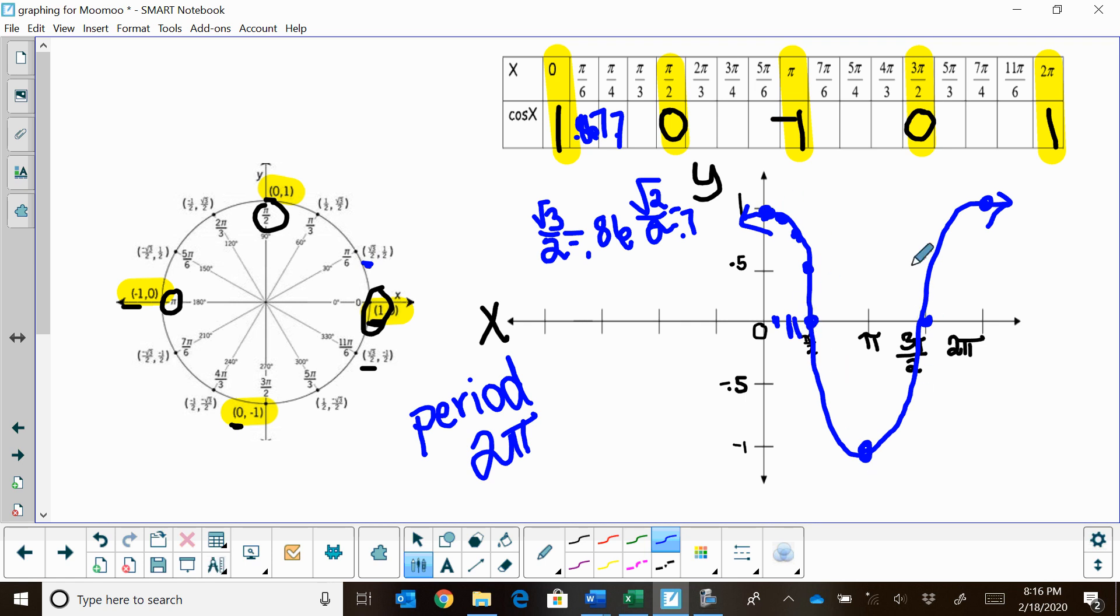We're just basically unfolding the unit circle onto this x-axis, and that's where the graph of cosine comes from. I hope this video was helpful on learning how to graph cosine of x.